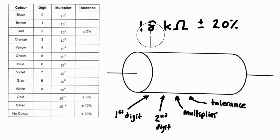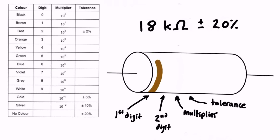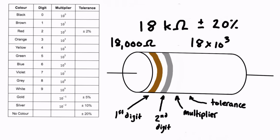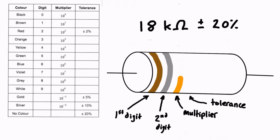Let's do one last example: 18 kilohms plus or minus 20%. Our first digit is 1, which is brown, and our second digit is 8, which is gray. So we draw on the first brown color band and then gray for the second. We're looking for 18,000 ohms — our first two digits are 18, so what do we multiply 18 by to get 18,000? That's times 10 to the power of 3, which in the table corresponds to orange, so we draw that on as our third band.